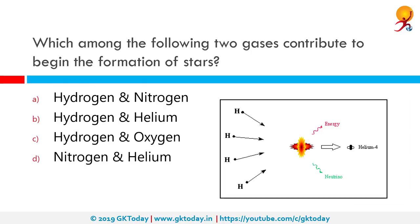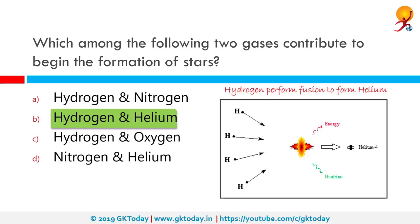Which among the following two gases contribute to the beginning of the formation of stars? The correct answer is hydrogen and helium. Hydrogen fusion — nuclear fusion of four protons to form a helium-4 nucleus — is the dominant process that generates energy in main sequence stars. It is also called hydrogen burning, which should not be confused with chemical combustion of hydrogen in an oxidizing atmosphere — this burning is strictly nuclear.